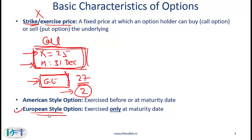I talked about a European style option. An American style option is one where the holder can exercise the option on any day before the maturity date. So if it is 30th September today and the holder wants to exercise this option, he can, as long as this is defined as an American style option.